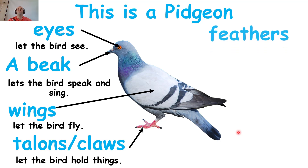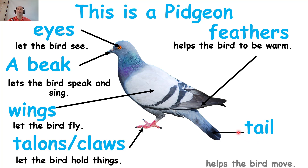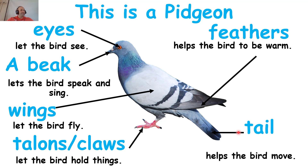The next part: feathers. A pigeon has feathers. The feathers help the bird to be warm, not cold — the bird can stay warm if it has feathers. And the last part — many birds have a tail, a pigeon has a tail. The tail helps the bird move when it is flying; it can use its tail to help it move. So that is the pigeon.